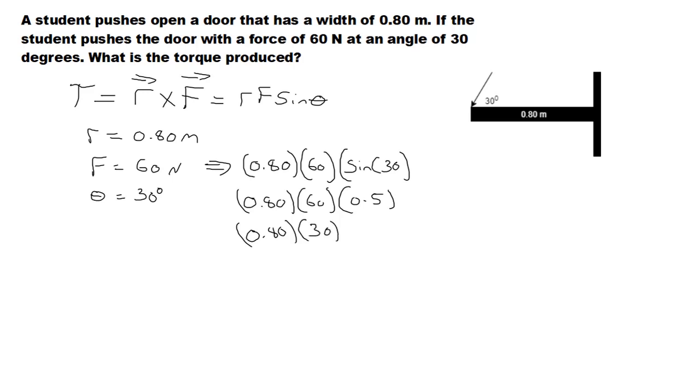80 percent of 30, or 0.8 times 30, is 24. So our torque produced is 24 newton meters, and that is how you find the torque.